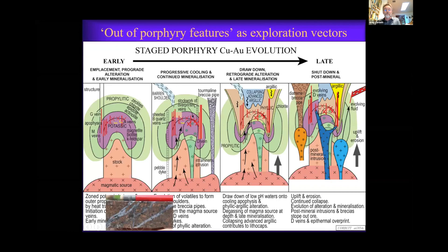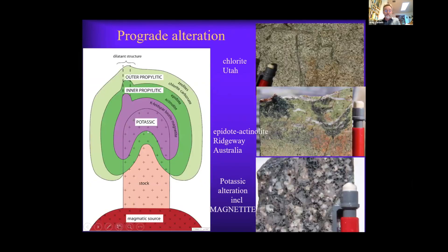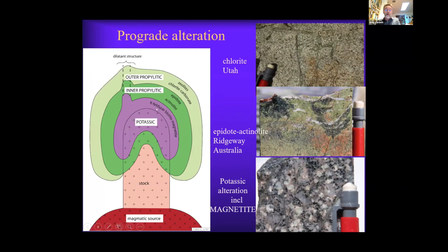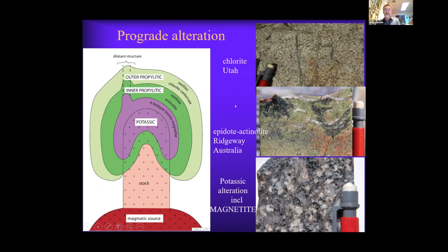That model also accounts for these out-of-porphyry features, which we use as vectors towards hidden mineralisation. As our porphyry is first in place, the hot intrusion comes into the wall rocks and progressively cools to give us zoned propylitic alteration, which grades inwards from outermost chlorite to epidote to actinolite, just before we hit the ore-hosting potassic alteration comprising K-feldspar, secondary biotite, and magnetite in an intrusion. This is the first occurrence of actinolite where you will get excited in the discovery drill hole just outside the Ridgeway porphyry.